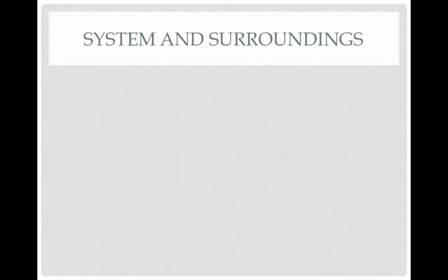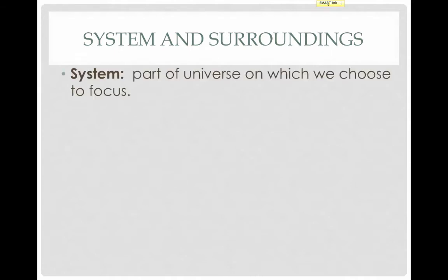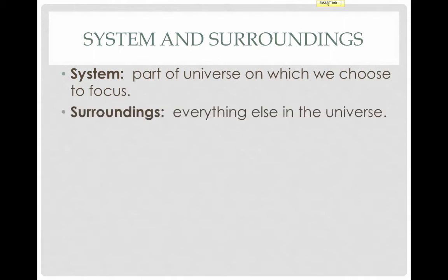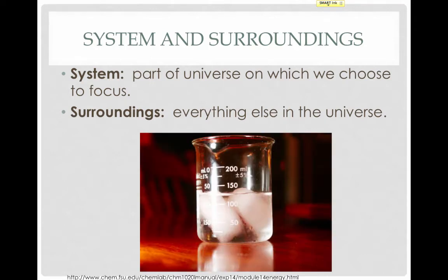Let's start by defining system and surroundings. The system is the part of the universe on which we choose to focus, and the surroundings is everything else in the universe. Take, for example, this beaker full of ice water. We can make a choice as to what our system is going to be. So let's say that we want to focus on the energy flowing into or out of the ice cubes — we can define the ice as our system. That means everything that isn't the ice is the surroundings.